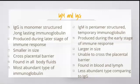IgG is found in all body fluids whereas IgM is found only in blood and lymph. IgG is the most abundant type of immunoglobulin at around 90% of total immunoglobulin, whereas IgM is less abundant compared to IgG.